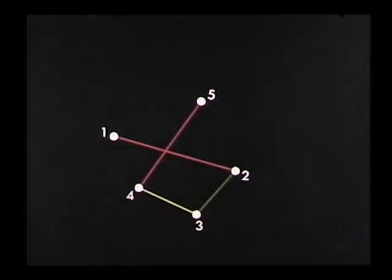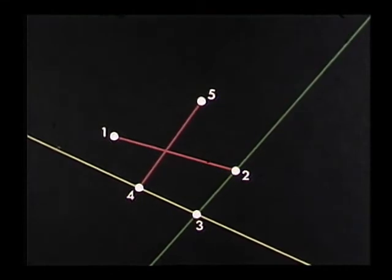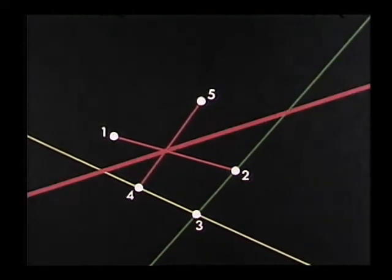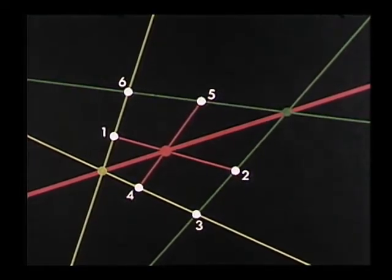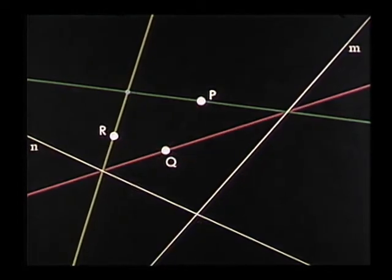Pascal's construction is also a special case of Steiner's. We'll take five points, set up Pascal's construction, and you'll see that the pencil through point five is projective with a pencil through point one. I'll show you the perspectivities involved in the projectivity.